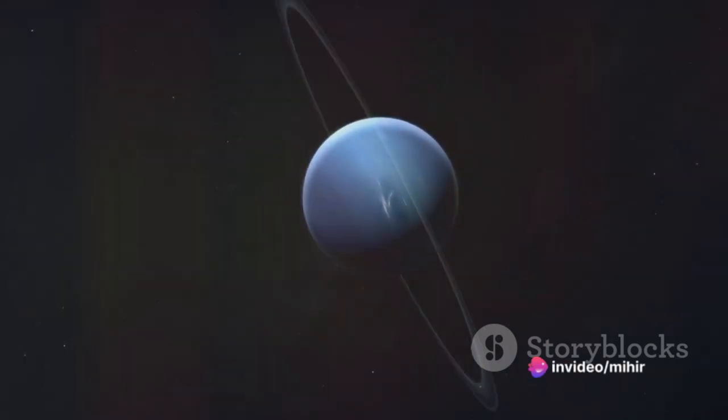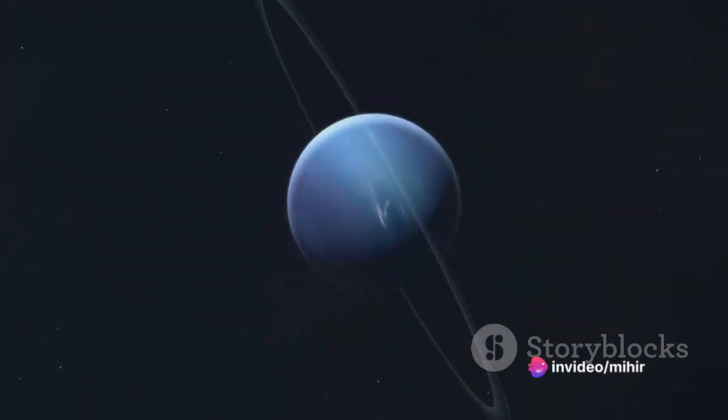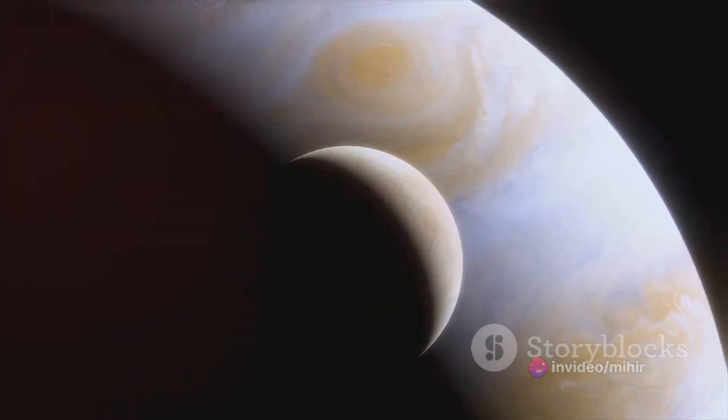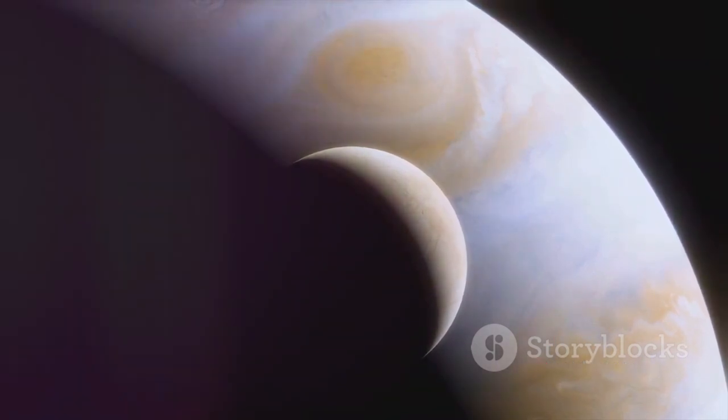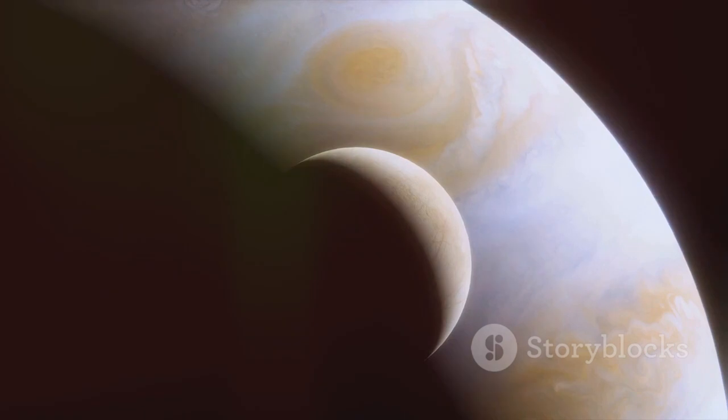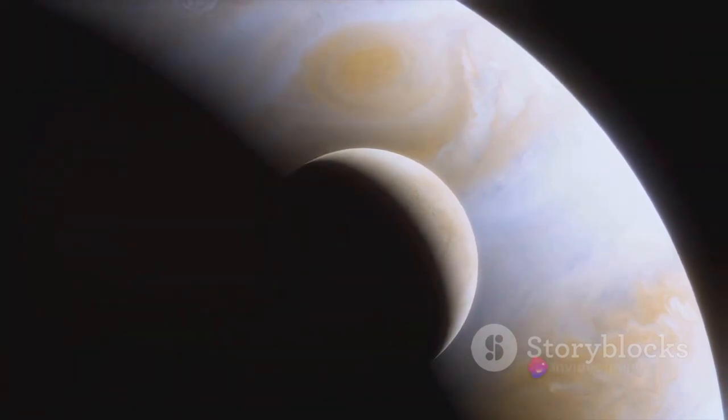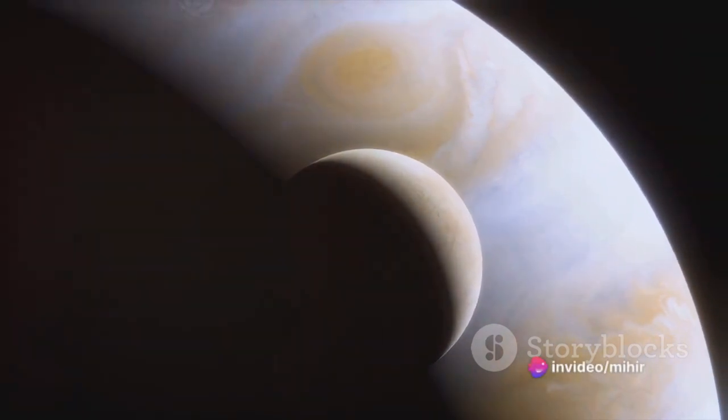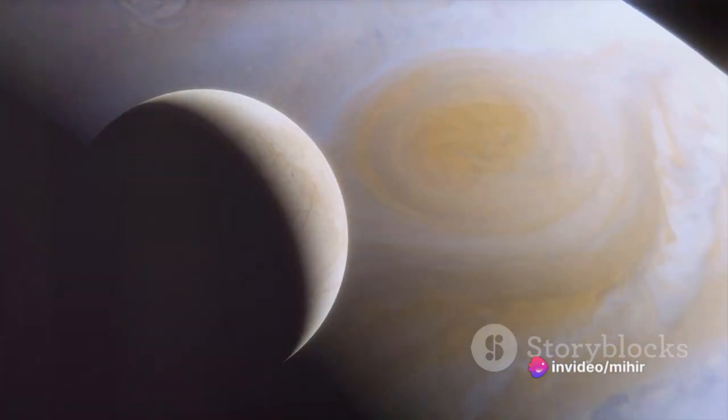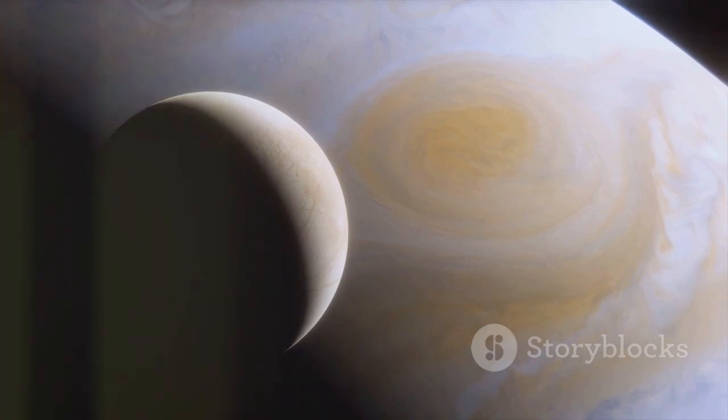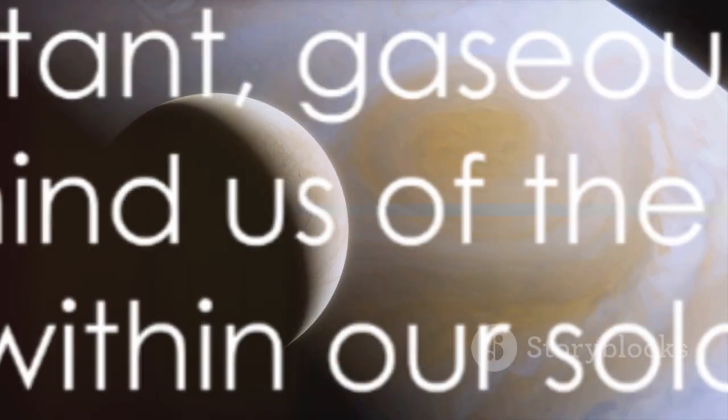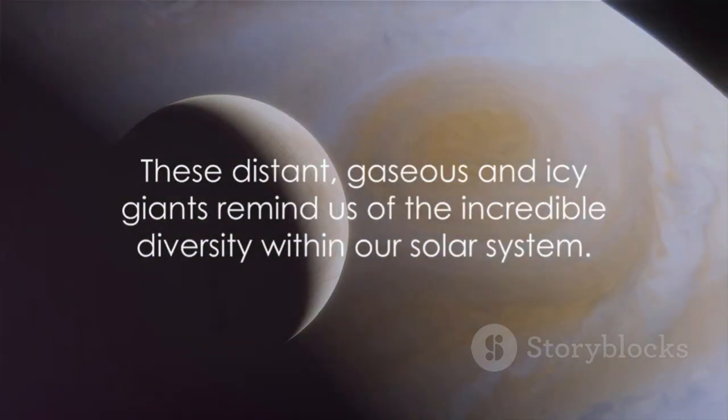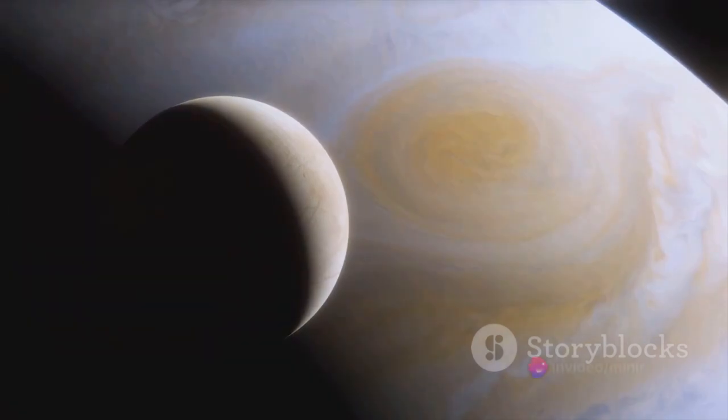Each of these planets, with their unique features and characteristics, exhibit the rich diversity that exists within our Solar System. From the stormy, gaseous expanses of Jupiter and Saturn to the icy, distant worlds of Uranus and Neptune, our understanding of the outer planets continues to grow. These distant, gaseous, and icy giants remind us of the incredible diversity within our Solar System.